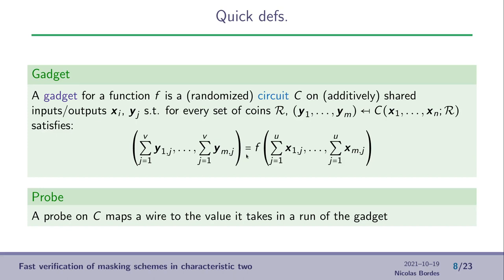This equality is just stating that the circuit is actually computing the right function f on the shared variants.